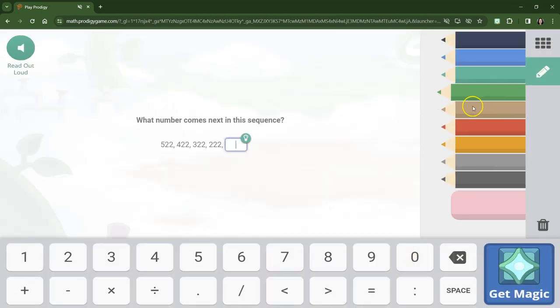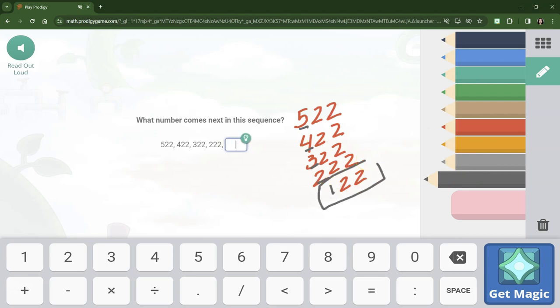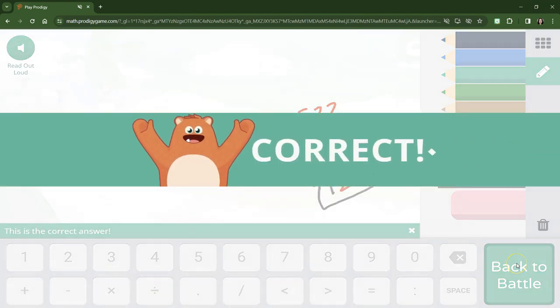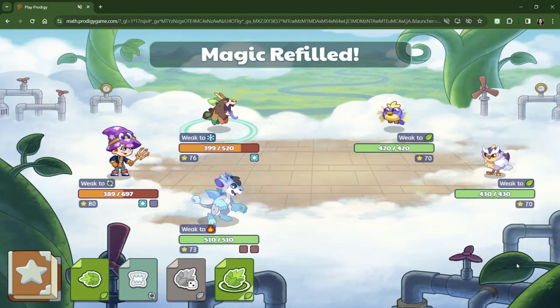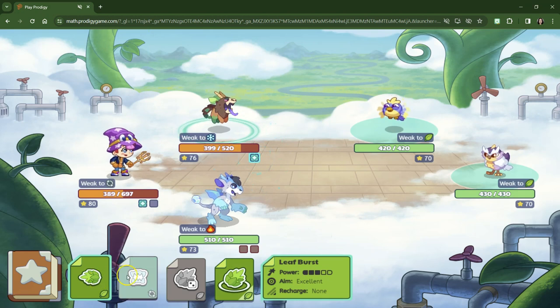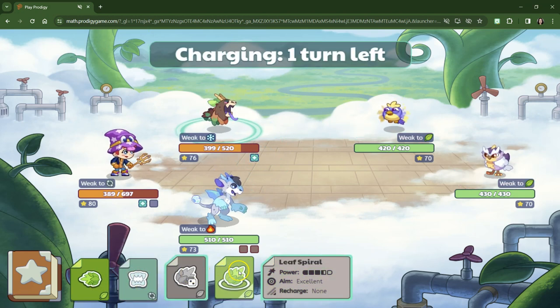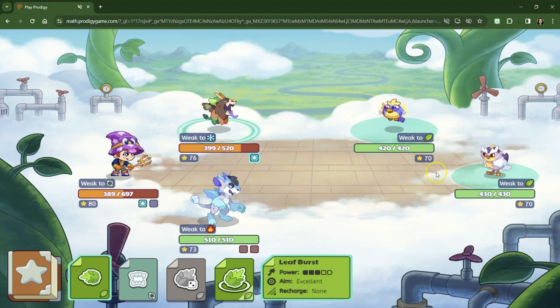Let's look again. It looks like, again, we're counting down. 522, 422, 322, 222. Well, we know it's going to be 22, but we're counting down by hundreds. 500, 400, 300, 200, 100. 122.